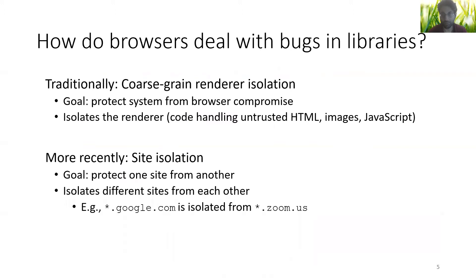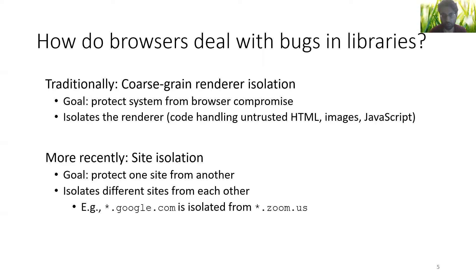But remember, everything important is on the web, and so browsers have also started isolating different sites from each other. For example, google.com is isolated from zoom.us. Renderer and site isolation are super important, but they don't completely eliminate the problem.